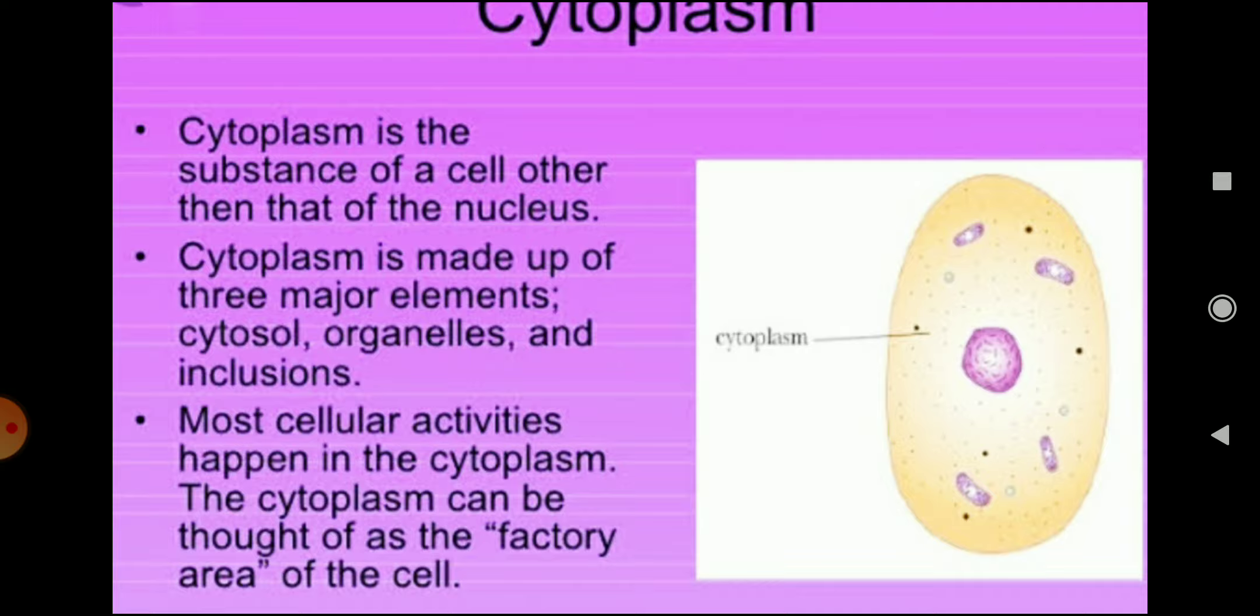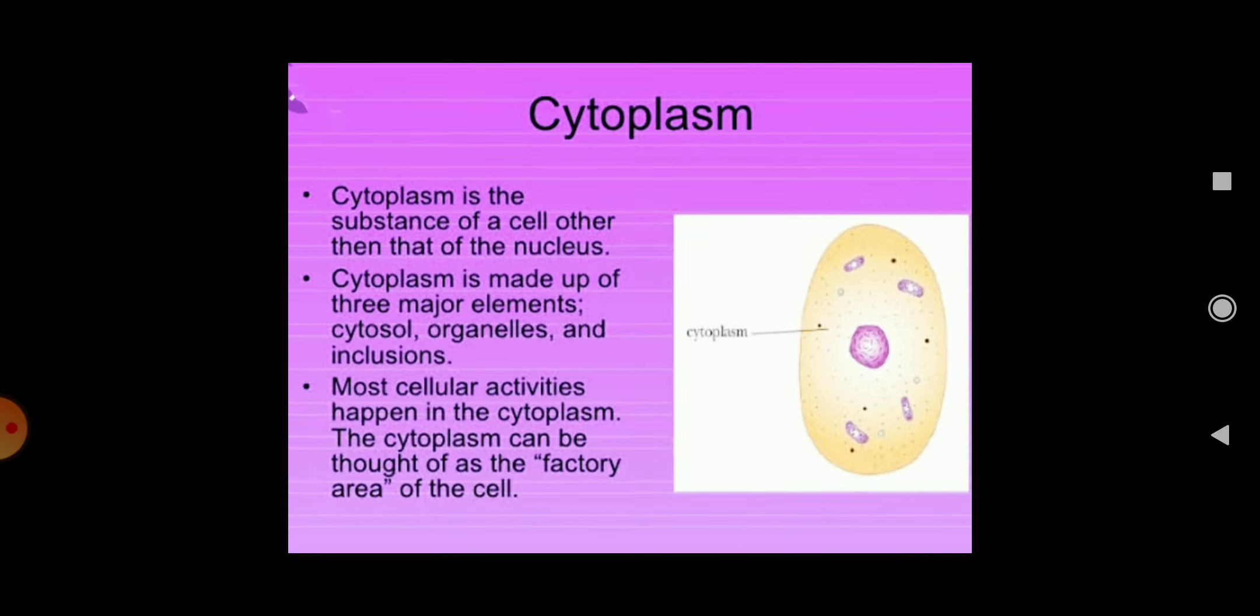Cytoplasm is made up of three major elements: cytosol, organelles, and inclusions. Most cellular activities happen in the cytoplasm. So basically this is the factory area of the cell. Factory area means the place where all the processes, all the biochemical reactions, enzyme functions, all that get completed there. That is cytoplasm. It can be asked, what is the factory area of a cell? So you will answer cytoplasm.